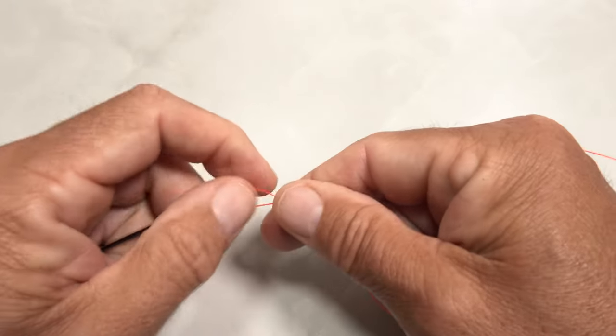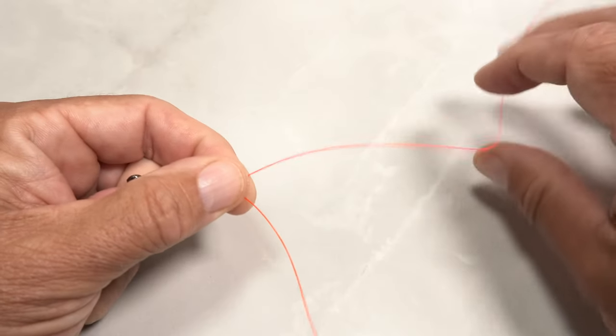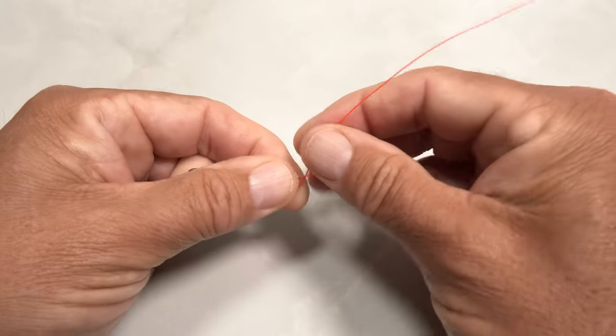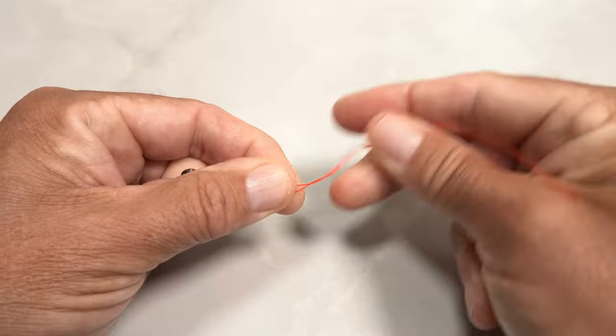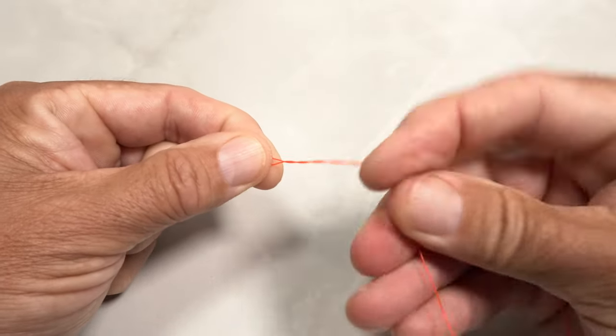Bring the tag end underneath the standing line and pinch the intersection of the two between the thumb and index finger of your left hand. Get hold of the tag end and begin wrapping it in an open spiral around the standing line. Anywhere from five to seven turns usually works best.